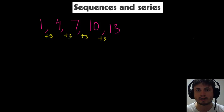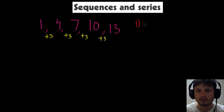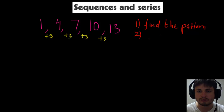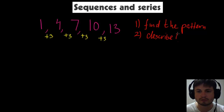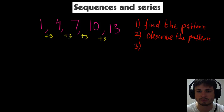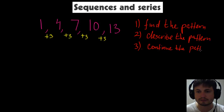There are three important steps we have to learn in this chapter. Step one: find the pattern in the numbers. Step two: describe the pattern — in words or in mathematical terms. Step three, and this is the important one where your marks will come from: continue the pattern, or find a number somewhere in the sequence that isn't shown to you.